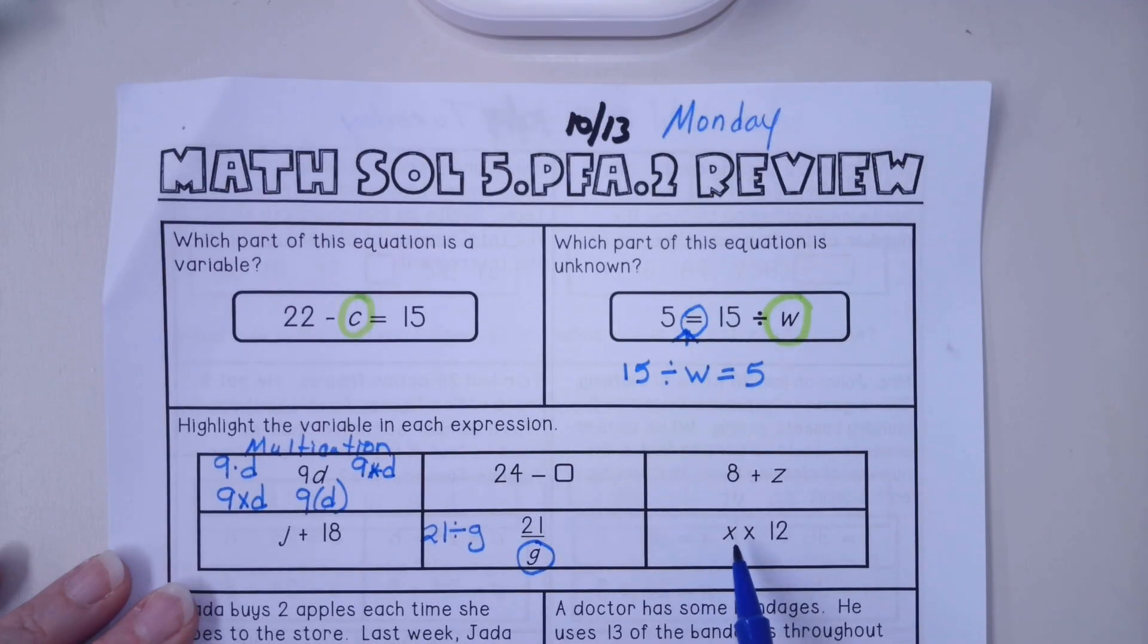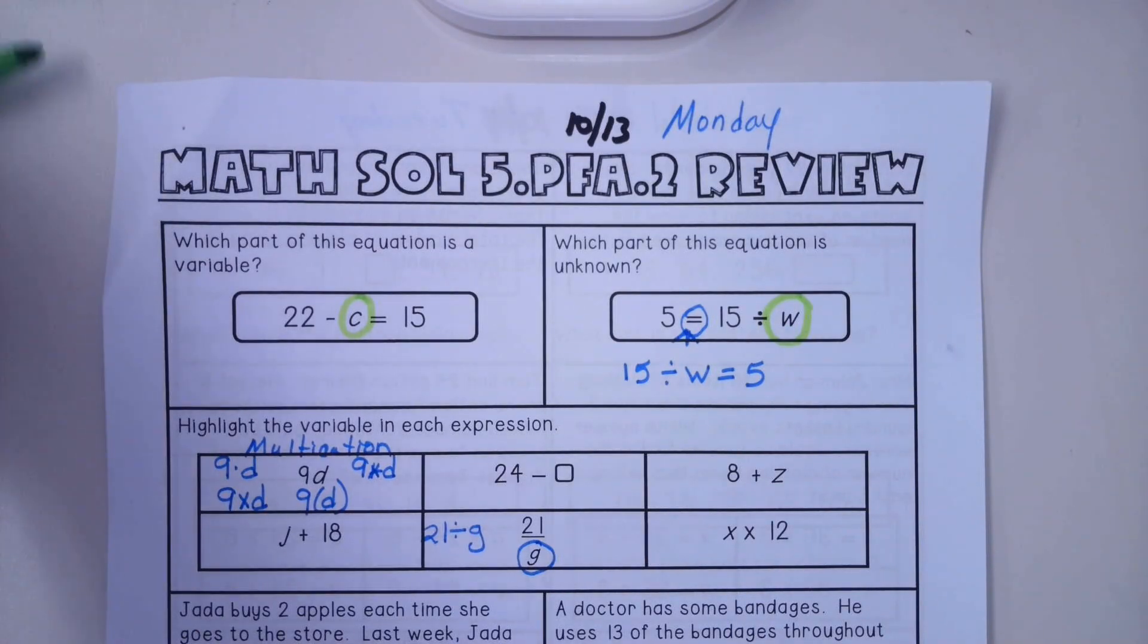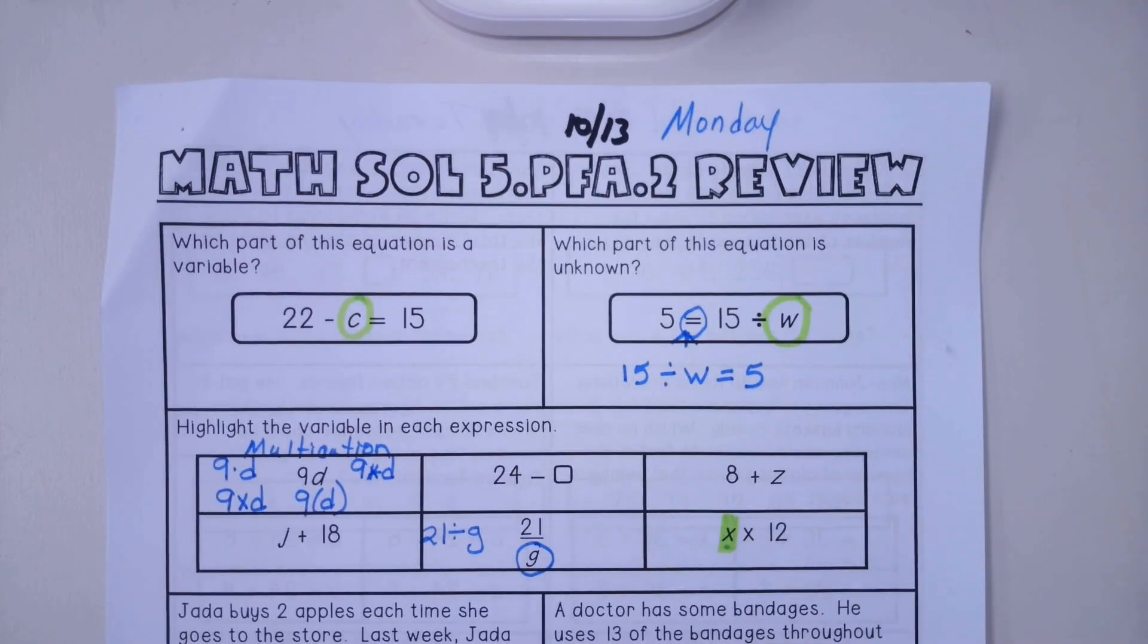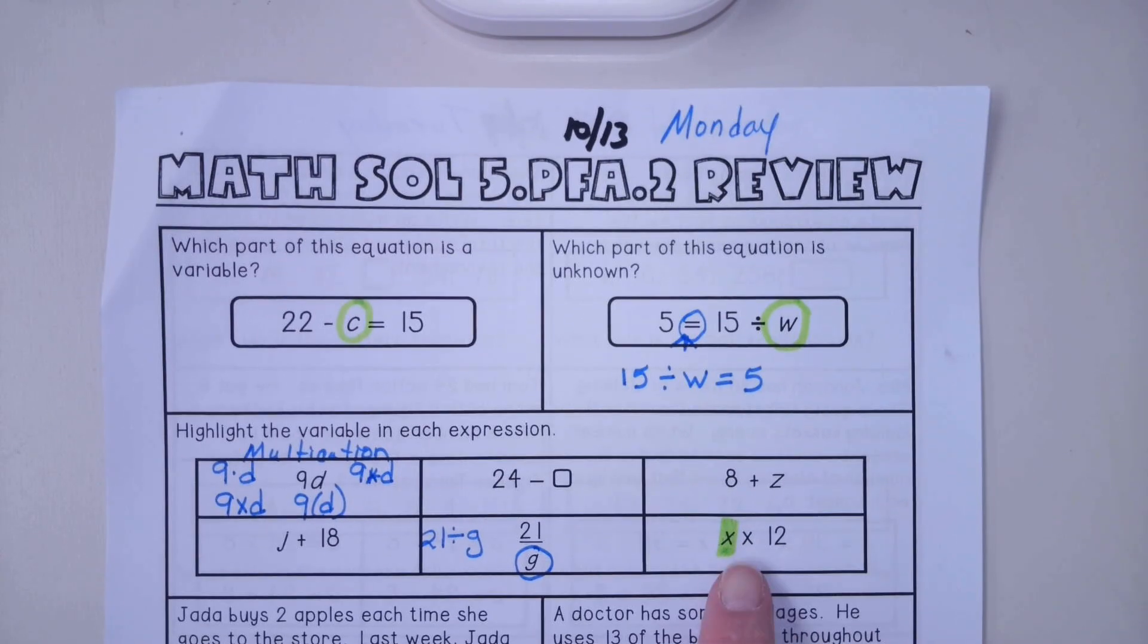This one is a little bit confusing, I think. If you notice, this x is slightly different than the following one. This one is italicized or slightly slanted. So that is your variable. The rest of those I think you can figure out.